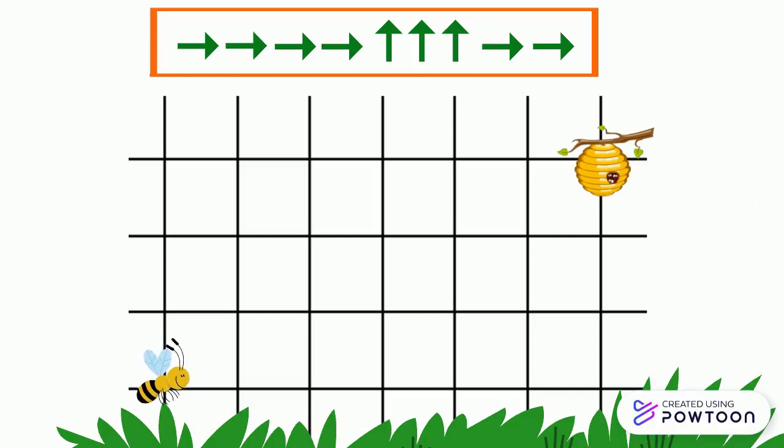Following the arrows, we notice that the bee will move 4 times to the right, then 3 times upwards, and finally 2 times to the right. Now let's trace the path of the bee. Notice that each arrow indicates a box.